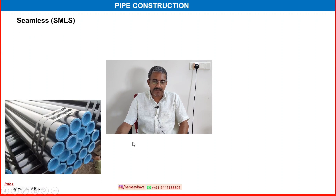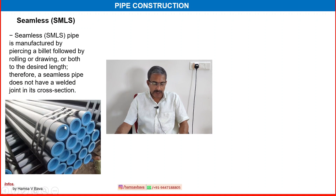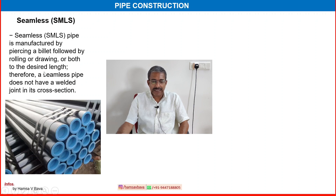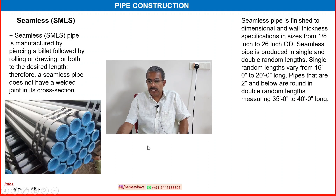Another important method is seamless, SMLS. Seamless pipe is manufactured by piercing a billet followed by rolling or drawing or both to the desired length. Therefore, a seamless pipe does not have a welded joint in its cross-section. That is the important difference from the electric resistance welding method.